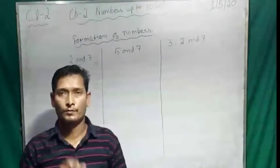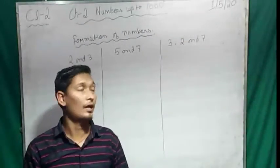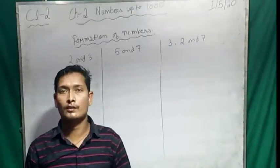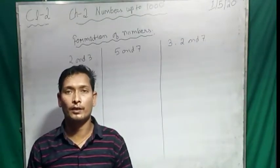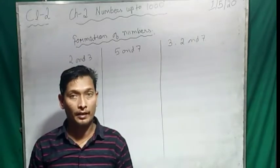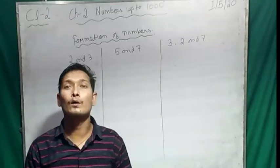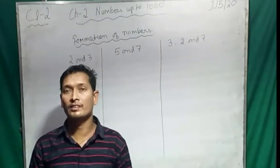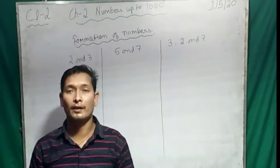Hello everyone. We are reading chapter 2, Numbers up to 1000. In the last class, we learned about ordering of numbers — that is, after, before, and in between. And today we will learn how to form a number if the digits are given.